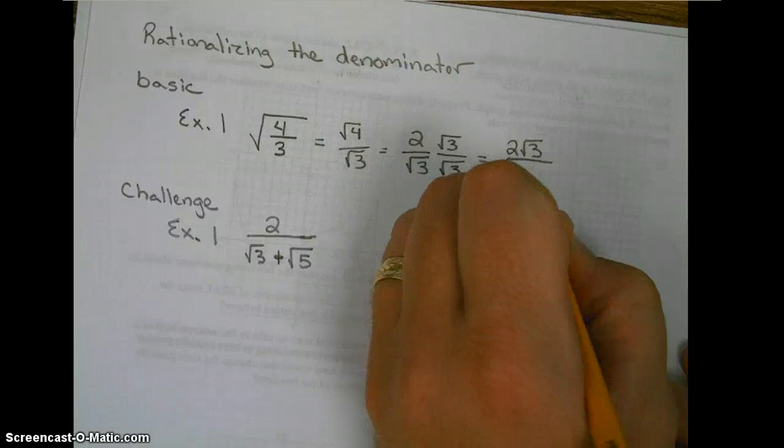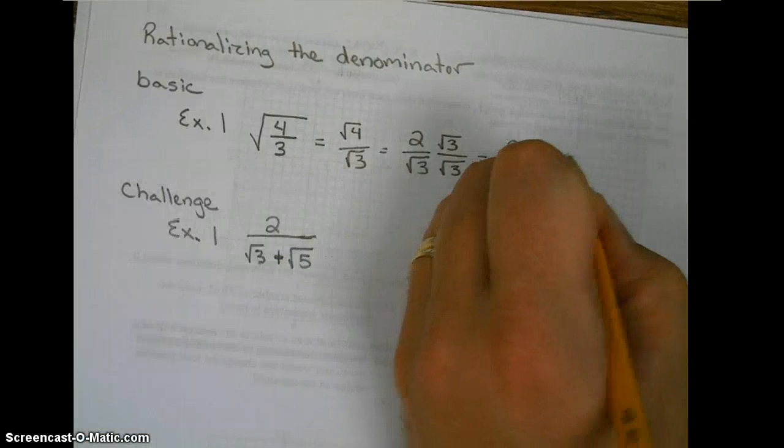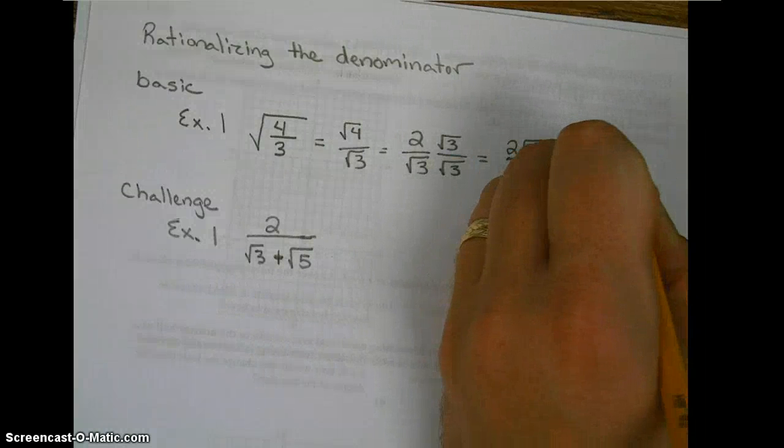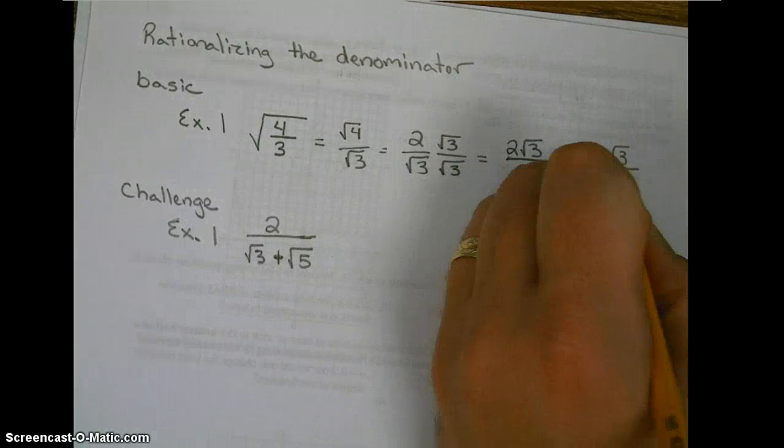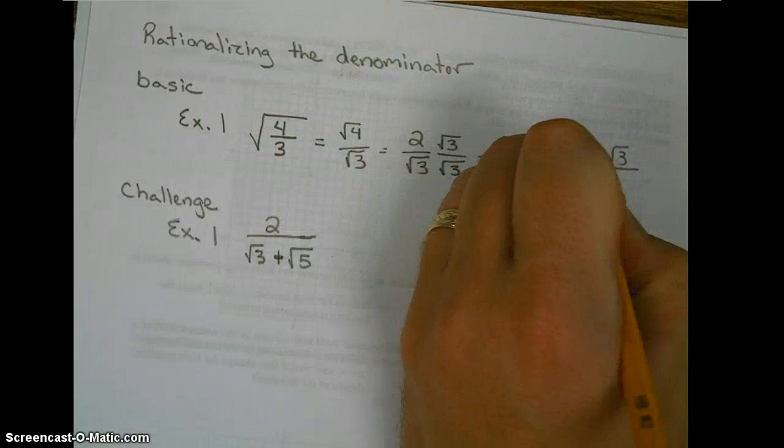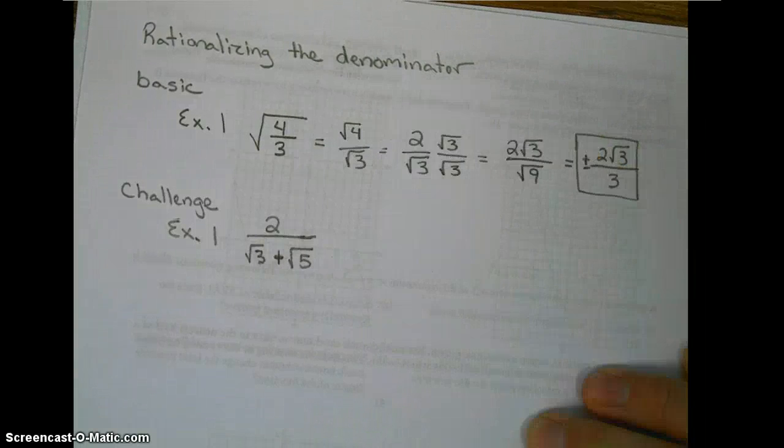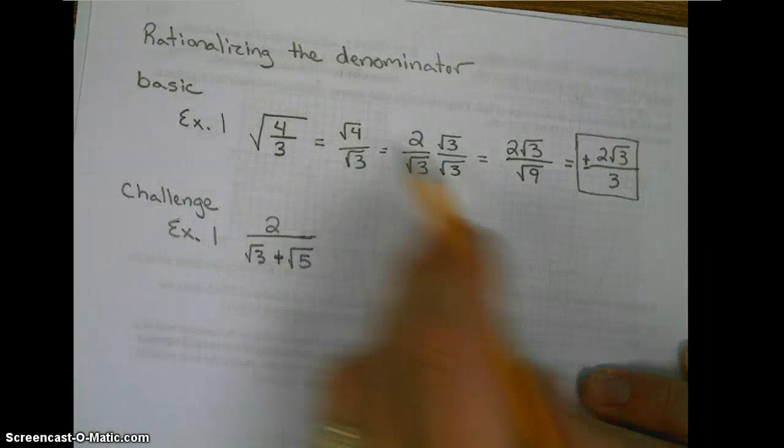2 times the square root of 3 stays on the top, and the square root of 9 is 3. And don't forget, this is plus or minus.